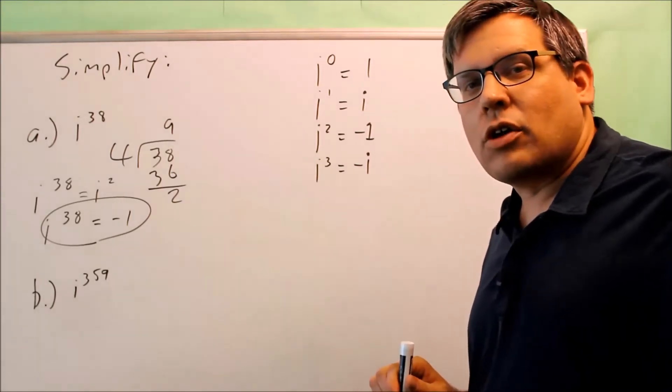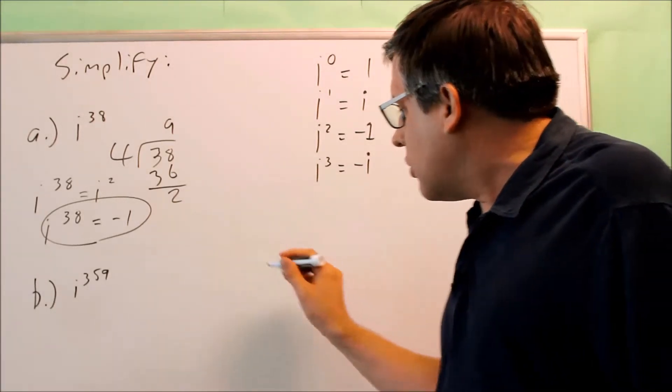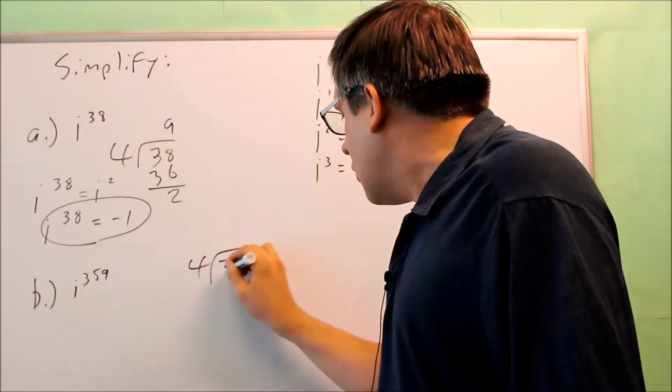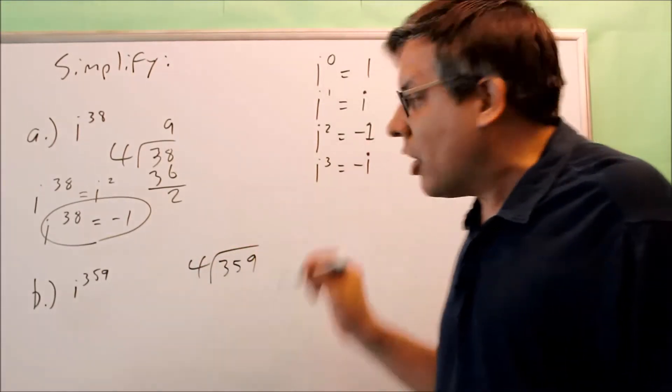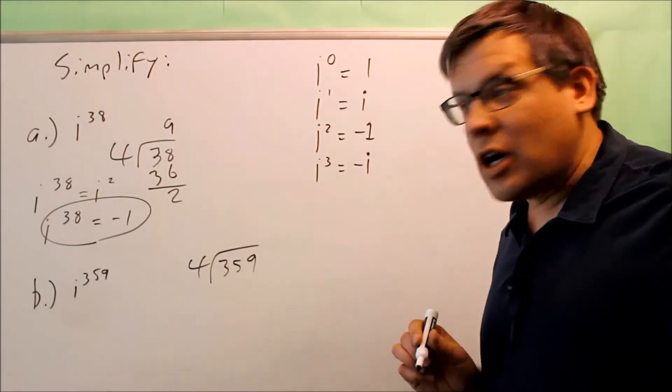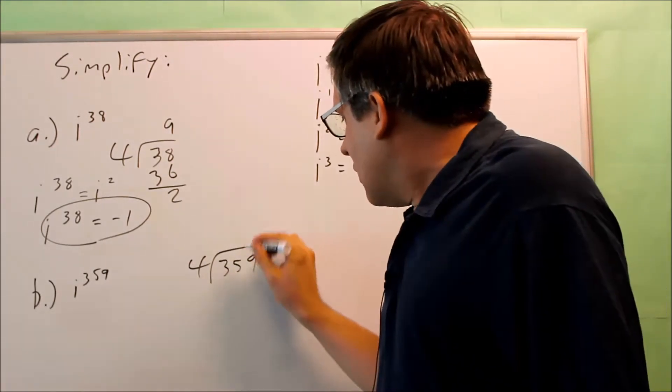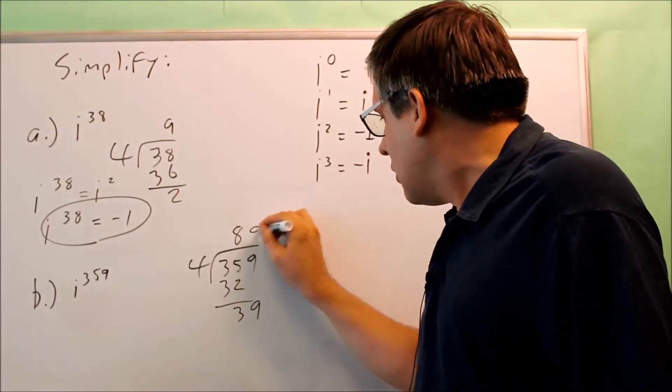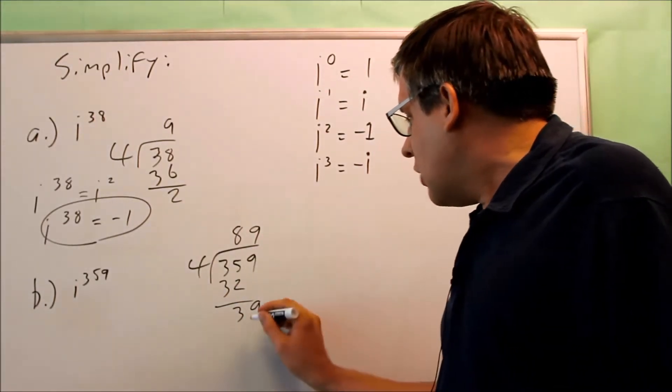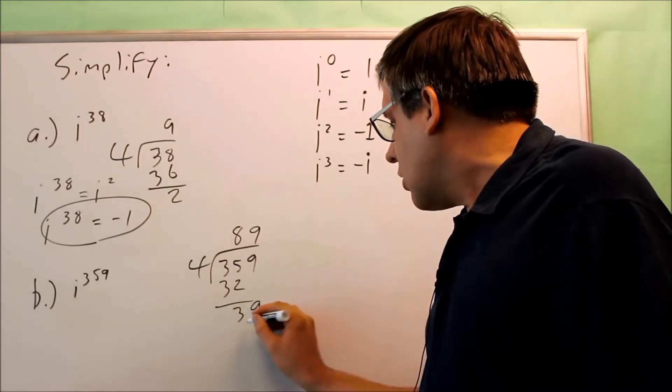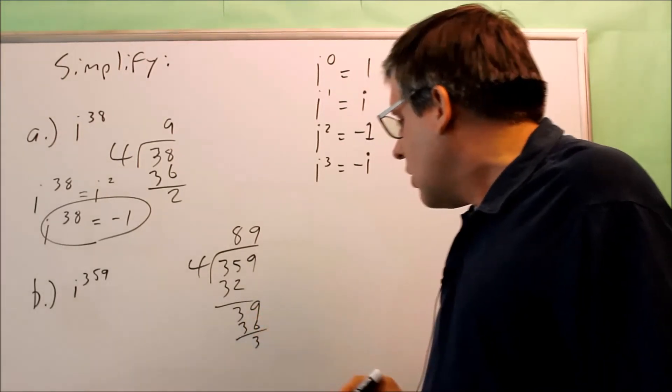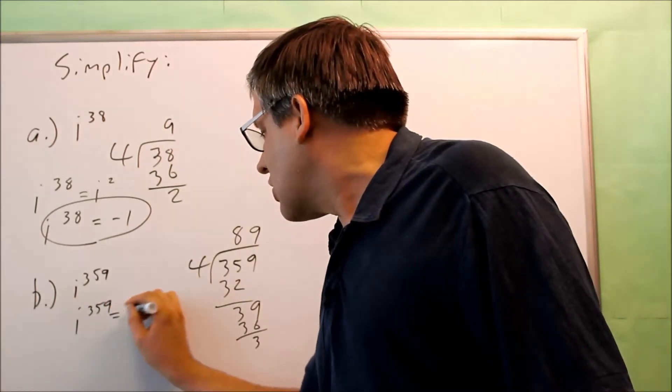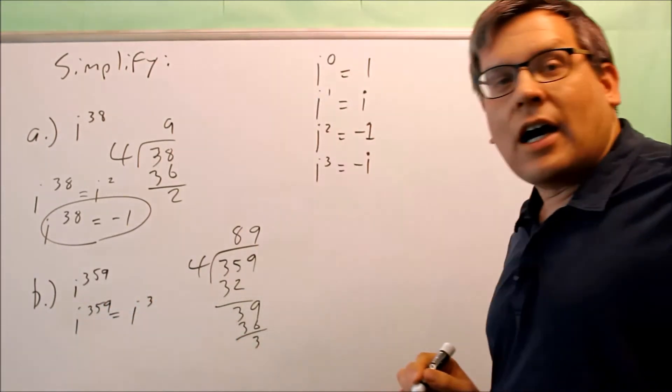Let's do this one down here, i to the 359. Again, what you want to do is take whatever the power is that they give you and divide it by 4 again because the pattern repeats every 4 times. If you do that, it goes in here 8 times, 32, we subtract, bring down the 9. 4 goes in there 9 times and what we get is a remainder of 3.